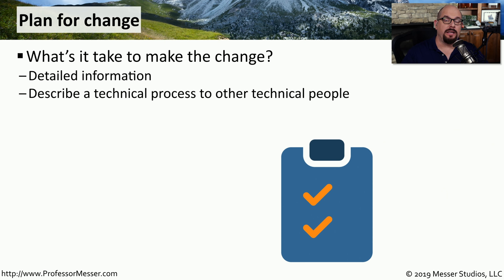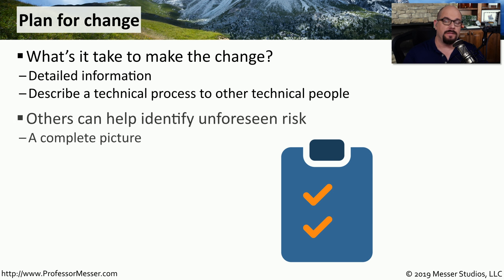Before making the change, you need to document every step it takes to perform this change from beginning to end. This is a technical document that will be presented to technical people so they know exactly what's going to happen with a switch, a router, an operating system, or any other component involved. By documenting this process, other people can gain insight into what the change really entails and may be able to find conflicts. For example, making one change to the operating system may affect a feature of an application that you weren't previously aware of, but the application team can identify that by reviewing your plan.